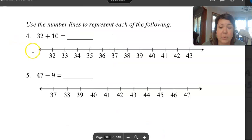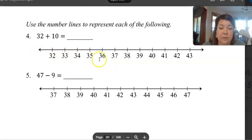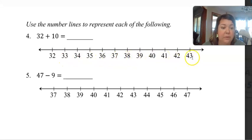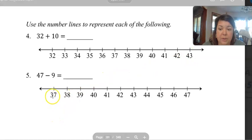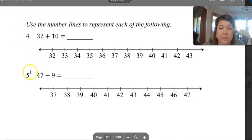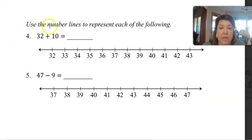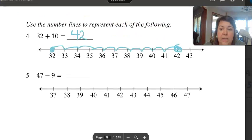Okay, next is the number line, so use your number line. So make one number line on your whiteboard, on your paper, and do 32, 33, 34, 35, 36, 37, 38, 39, 40, 41, 42, and 43, and then on your second one you're going to do 37 to 47. 32 plus 10 and 47 plus 9, and once you use the number line to represent each of the following, so pause and do that now.